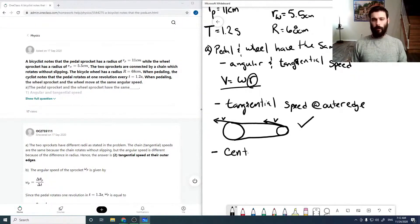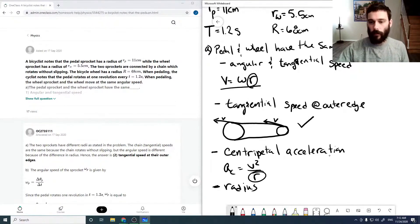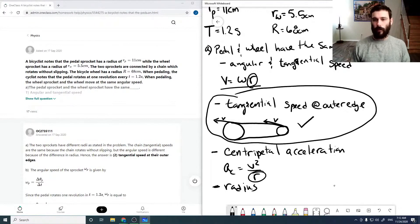So, the other ones are centripetal acceleration, and again, our centripetal acceleration is V squared over R, and so, because they have different radii, it'll be impossible for them to have the same centripetal acceleration. And the fourth one is radius, which again, it's given in the question that they don't have the same radius. So for A, the answer is just tangential speed at outer edge.